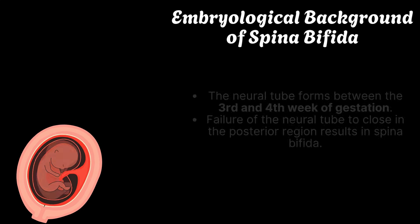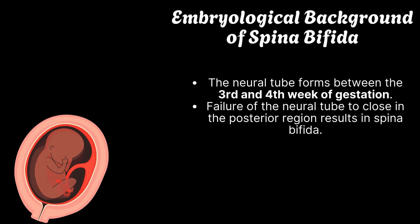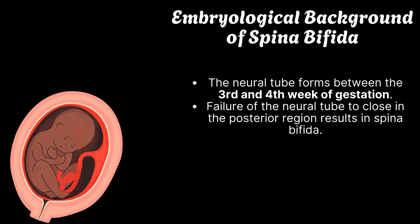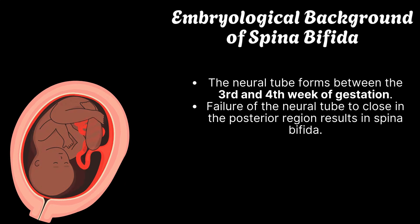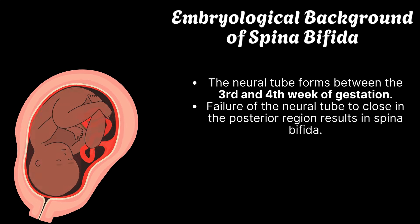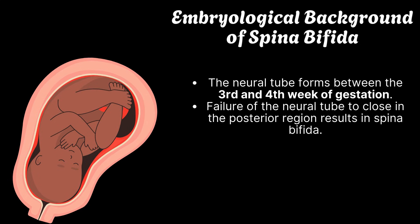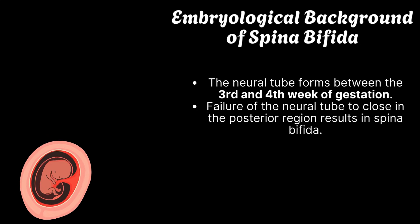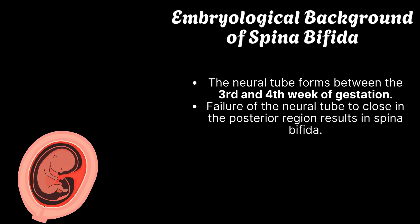What is the embryological background of spina bifida? The neural tube forms between the third and fourth week of gestation. Failure of the neural tube to close in the posterior region results in spina bifida.